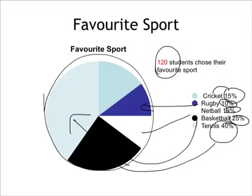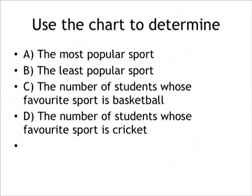So the question now is you have the percentage. If I ask you the actual number of students that chose these sports, how would you work that out using this information? In the exam you might have a question based on that pie chart to work out the most popular sport, the least popular sport, the number of students whose favorite sport is basketball and the number of students whose favorite sport is cricket.